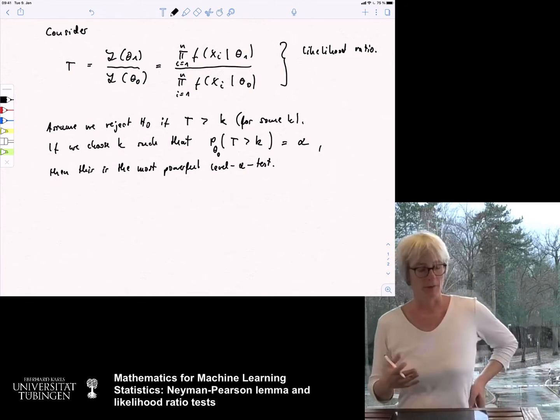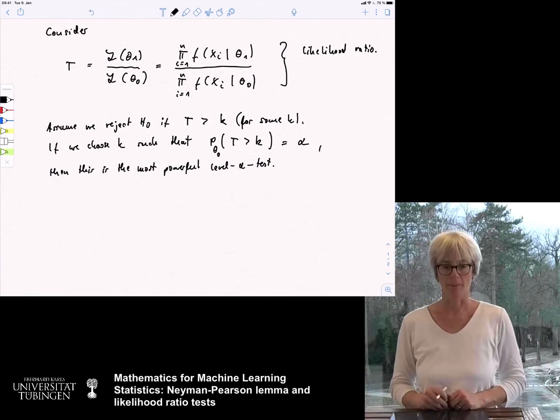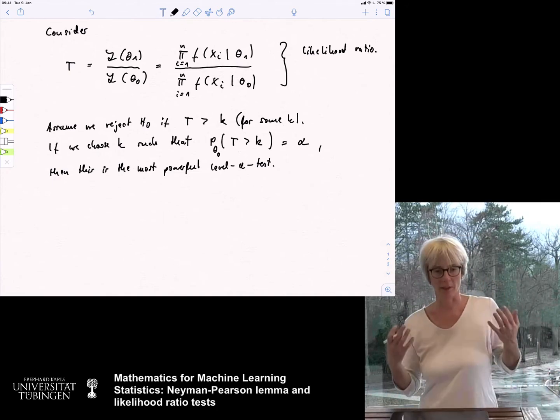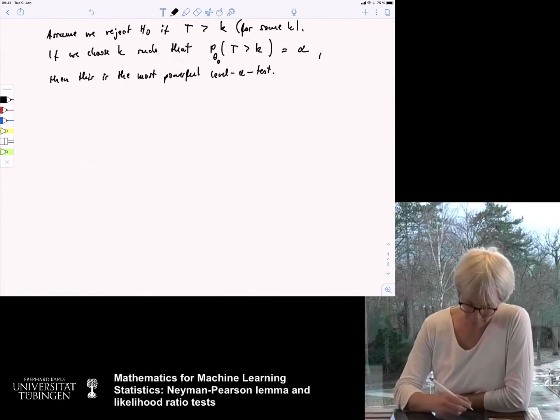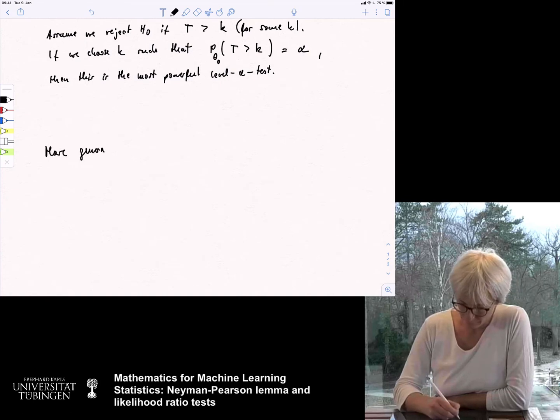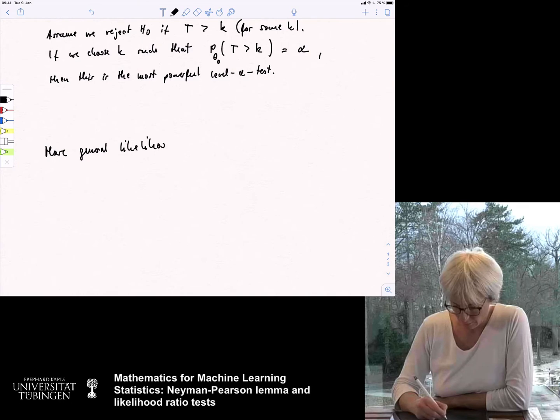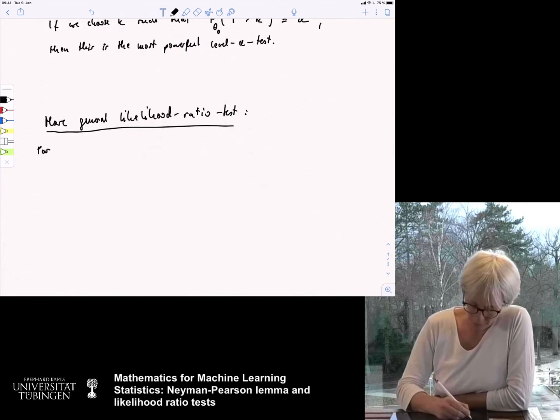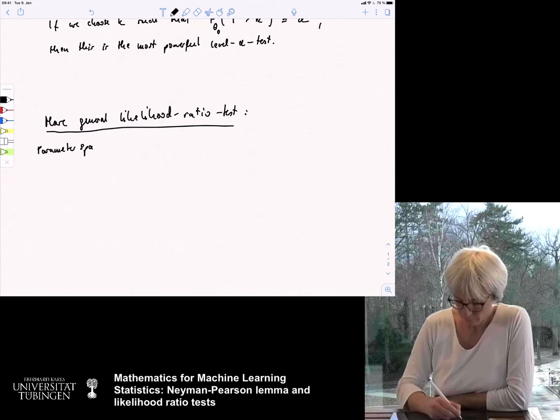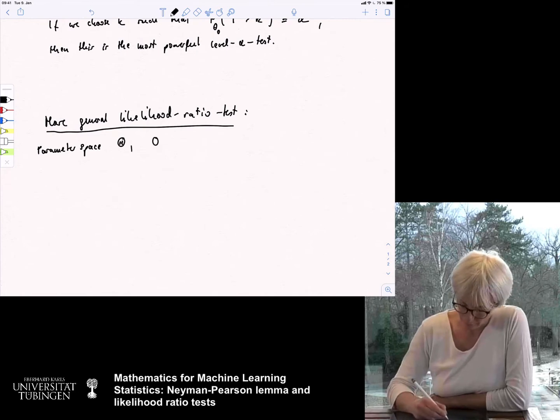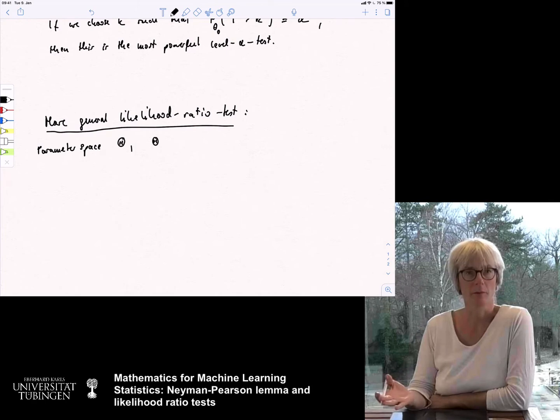And it also shows you what the principle of a likelihood ratio test is. And you can this also more, so I do not want to prove that theorem, I just want to give you the statement. But what I want to show you is now, how you could also have a more general version of this likelihood ratio test. So, I write it here. More general likelihood ratio test. So, this works as follows. Our parameter space is again theta. And now, we assume we have a set of parameters.